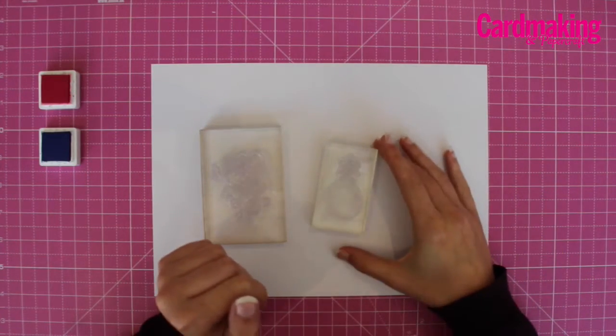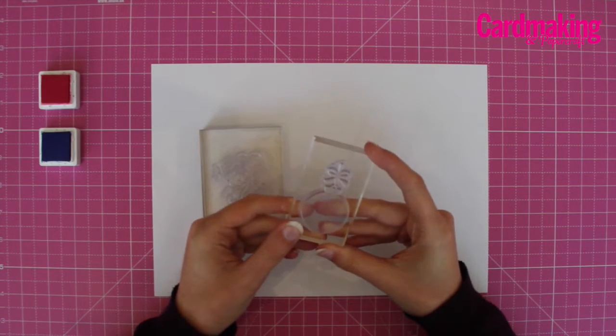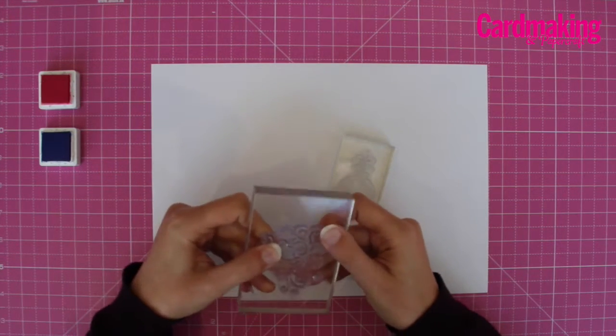This video will show you how to add patterns to your plain stamps using a stamp kissing technique. You'll need a solid stamp and a pattern stamp for this technique.